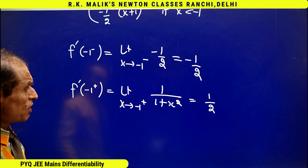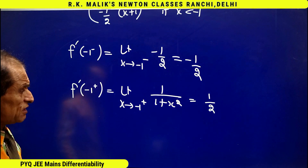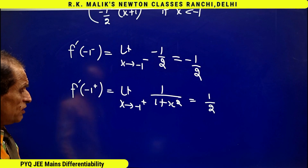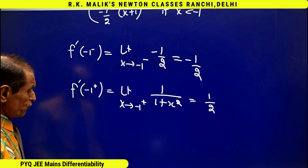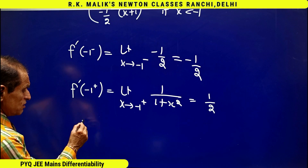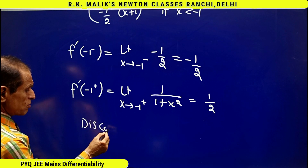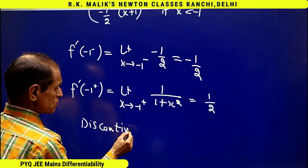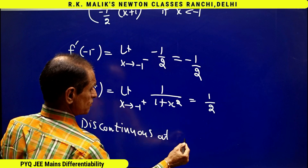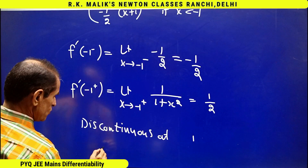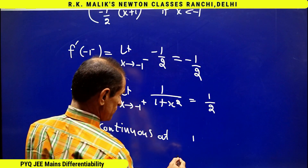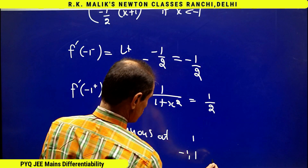Since the left hand derivative (-1/2) and the right hand derivative (1/2) are not equal, I can conclude the function is non-differentiable at x = -1. Therefore the final conclusion is: the function is discontinuous at x = 1, and non-differentiable at both x = -1 and x = 1.